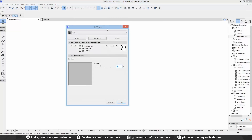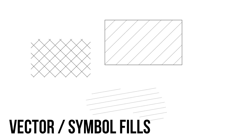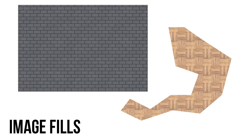ArchiCAD has four different types of fills. Solid fills are just simple monocolored fills which can vary in their opacity. Vector fills and symbol fills are almost the same — the difference is that vector fills are made of pre-set vector shapes, while symbol fills can be made by yourself. Image fills are made of JPEG or PNG files.